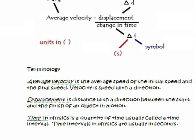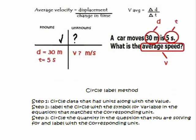Let's move on to the calculation. We've gone over the concept, so now it's time for the mathematics part. To help students solve a physics problem, what I like to use in my classroom is called the circle label method. It ensures you have an organized way of working with your data and making a smooth transition into your calculation. Different teachers have different ways, but this one has been successful in my classroom. Here's how it works.